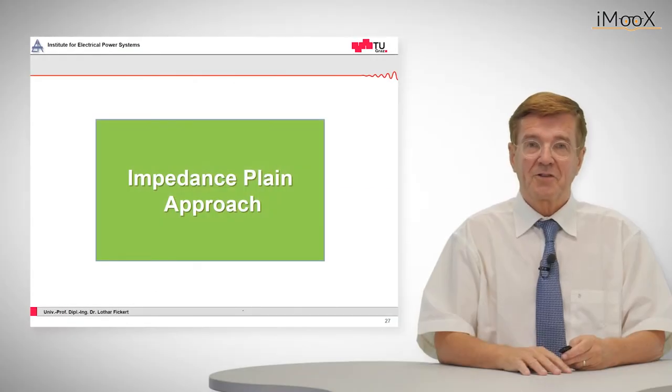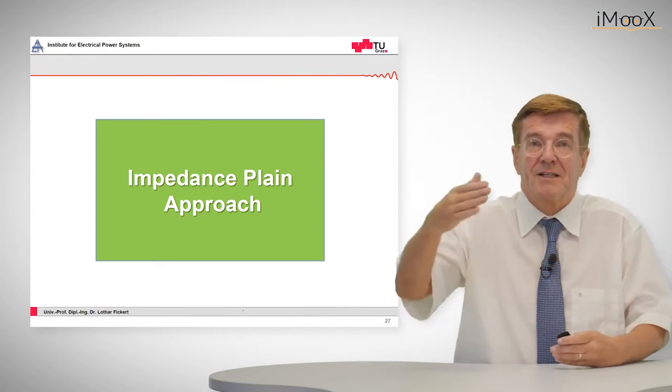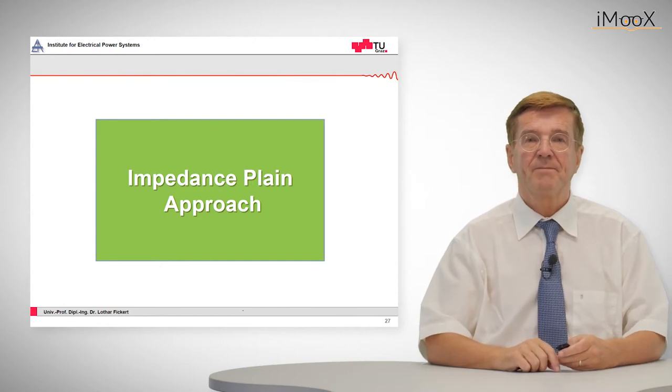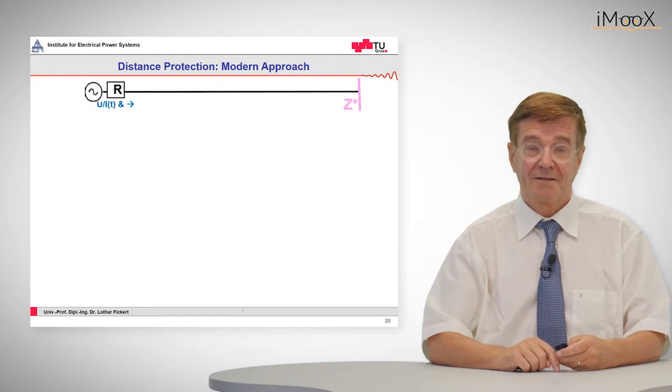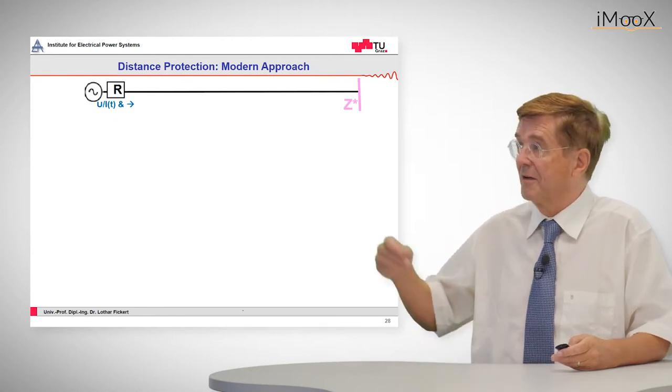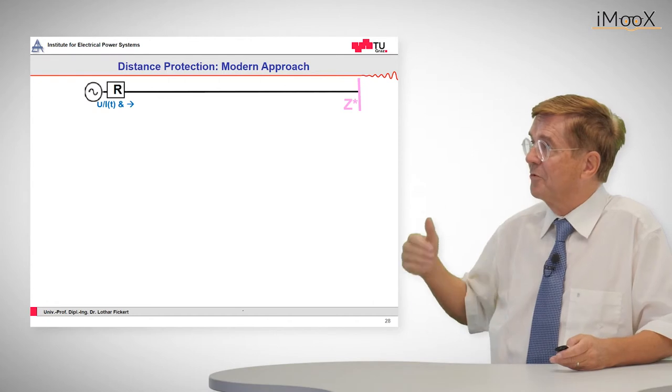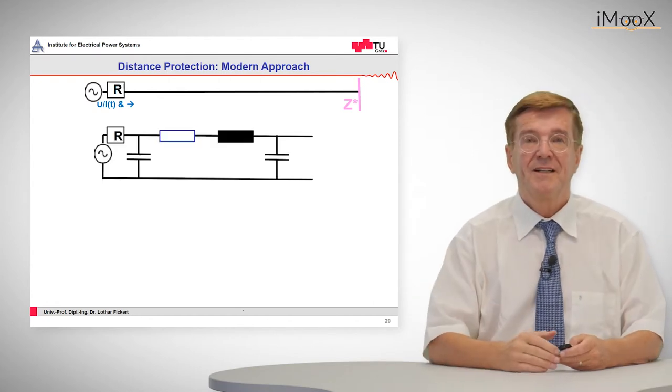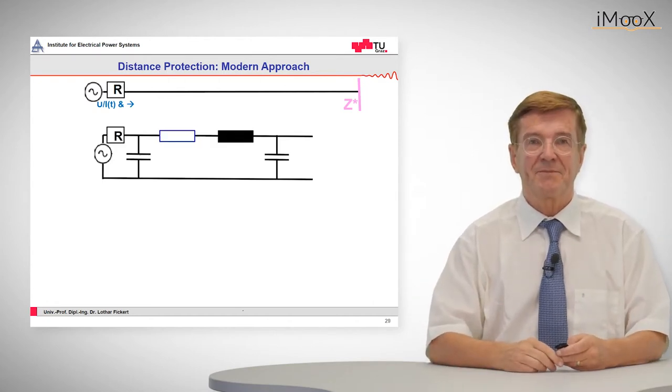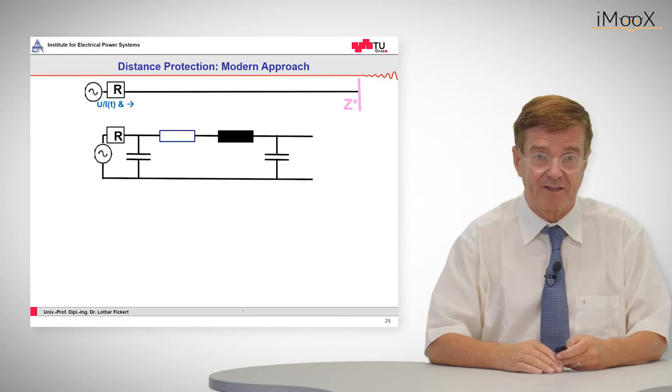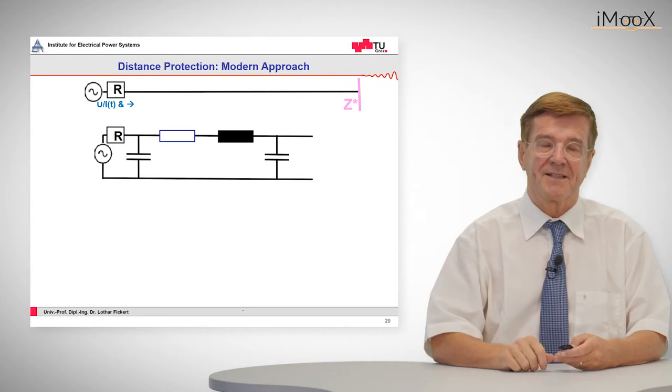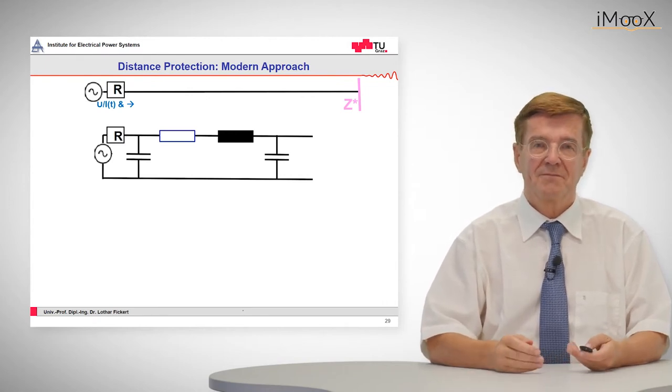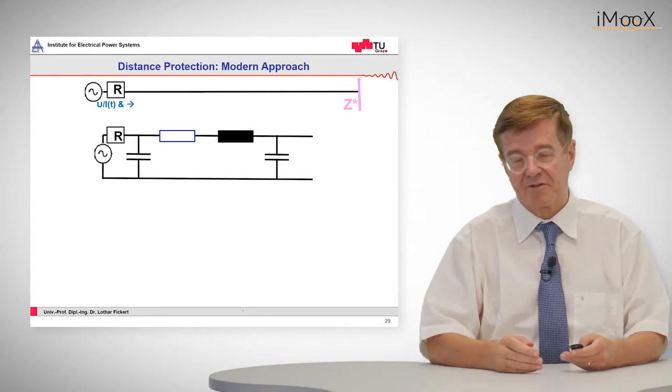The other approach for distance relays in order to determine is the fault on the own line or is it beyond this is the impedance plane approach. So we start again with the same fault impedance model. We have a source, we have the relay and we have a line on which there may be a fault. This line can be represented by the pi equivalent circuit which consists of a resistance and inductance and two capacitances which usually are assigned to the left and to the right side.